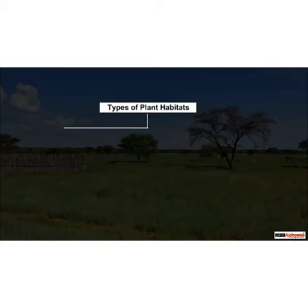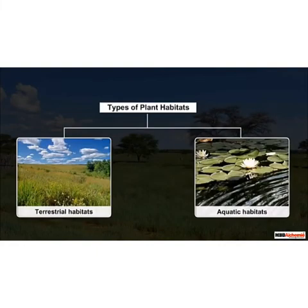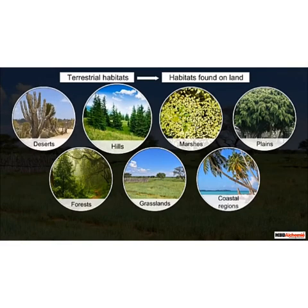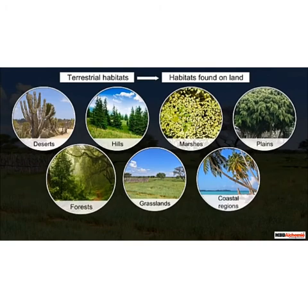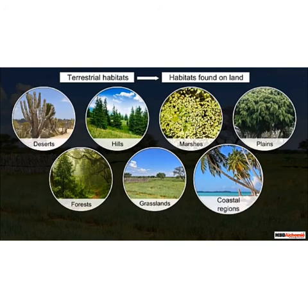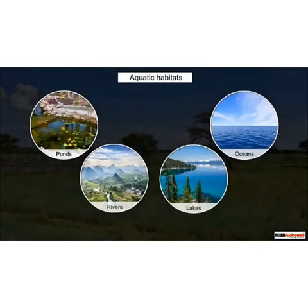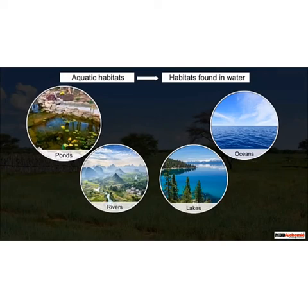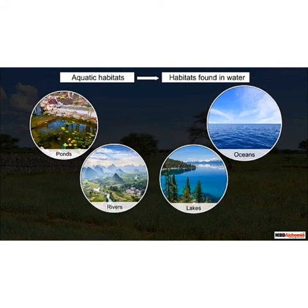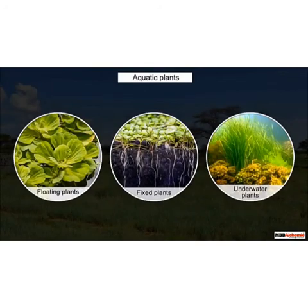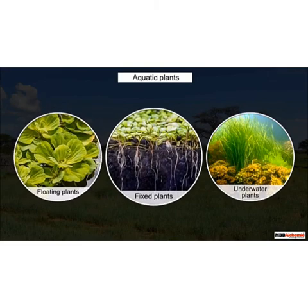Broadly, there are two types of plant habitats. Terrestrial habitats are the habitats found on land. These include deserts, hills, marshes, plains, forests, grasslands, and coastal regions. Plants that grow on land or in any of these terrestrial habitats are called terrestrial plants. Aquatic habitats, on the other hand, are the habitats found in water. These include ponds, rivers, lakes, and oceans. Plants that grow in water or in any of these aquatic habitats are called aquatic plants. Aquatic plants can be further grouped into three types: floating plants, fixed plants, and underwater plants.